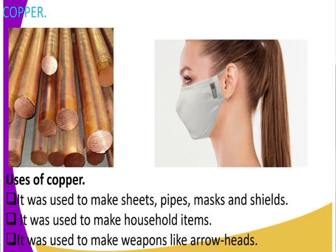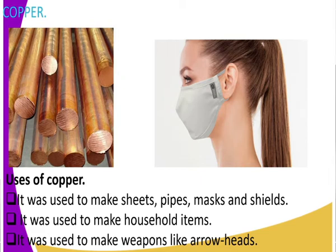Now let us look at copper as a metal. In the first image we have copper rods. People who do electricity installation use copper rods. One reason they use copper is because copper does not easily rust. All those electricity lines — the copper rods used in electricity installations — they don't get rust. That is a key property of copper.